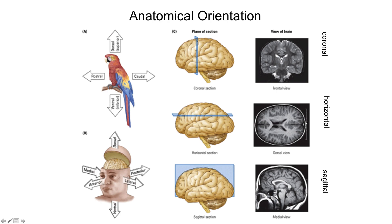Here you can see the brain beautifully in the horizontal view — these are all MRI scans. The last plane: if you cut the brain from side to side, you will have a sagittal view. Definitely remember all those terms — write them down, highlight them in the slides. Whatever you do, definitely don't forget these.